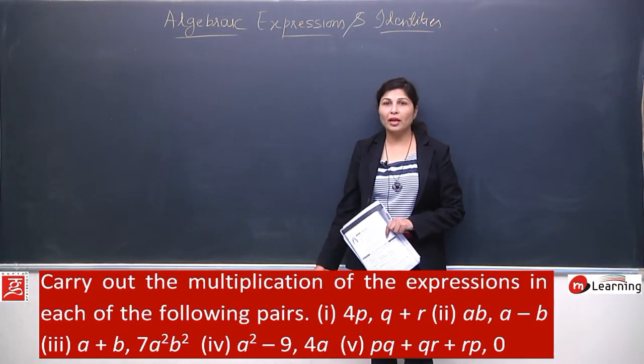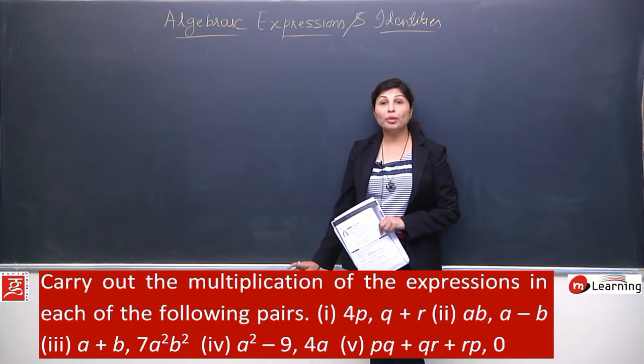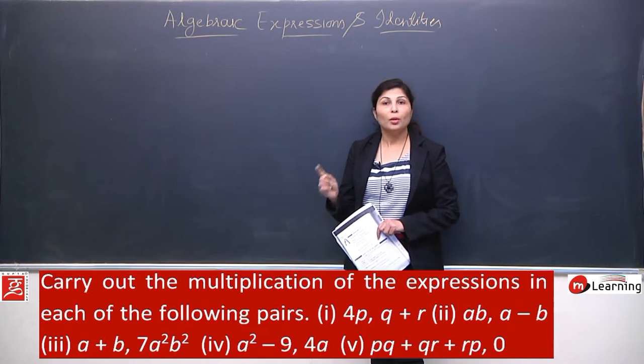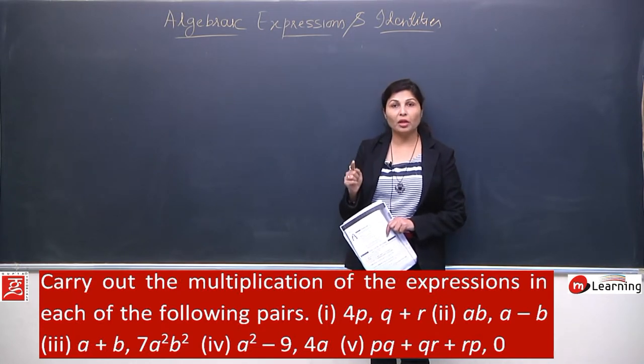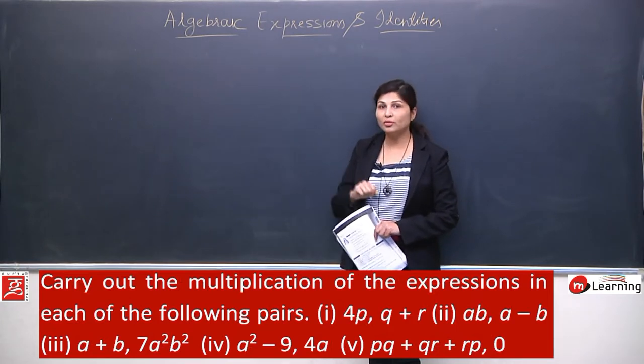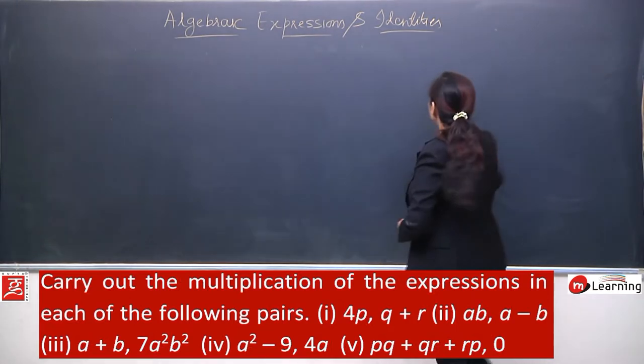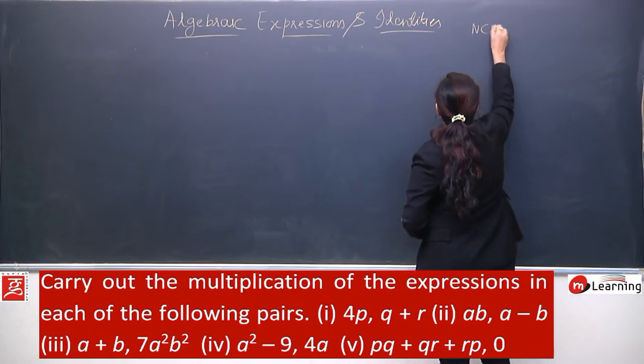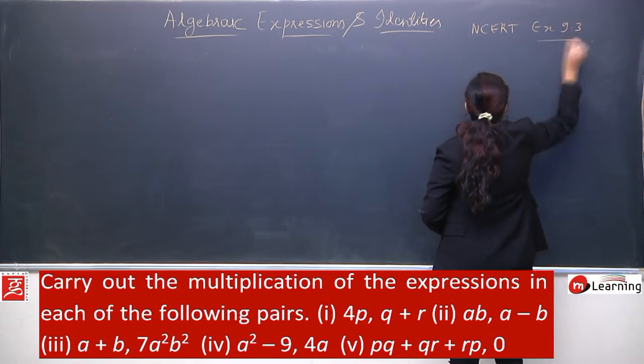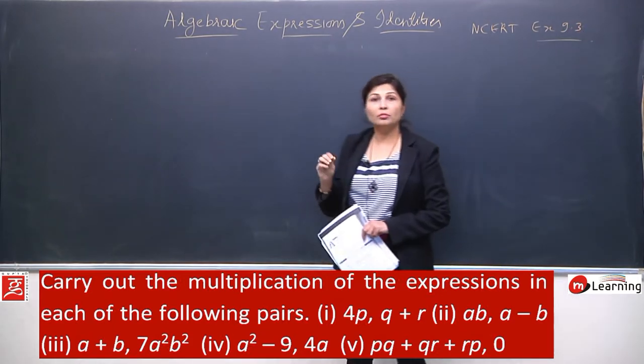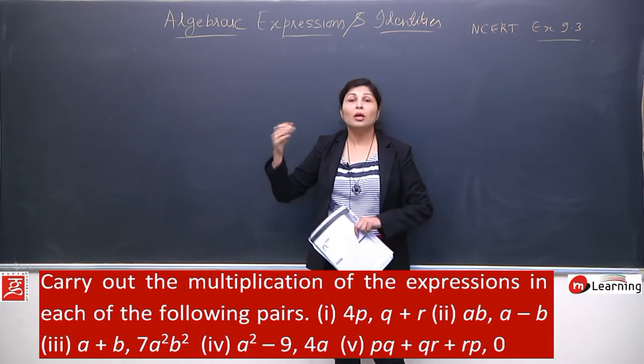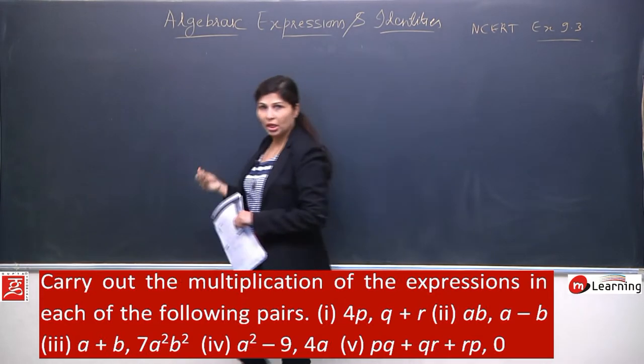We have just solved exercise 9.2 which was completely based on the product of monomial and monomial, meaning each expression had a single term, so it was very easy and we finished it quickly. Now I am moving to exercise 9.3. In this exercise they will give you either monomial multiply by binomial or monomial multiply by trinomial, meaning the terms will increase slightly.